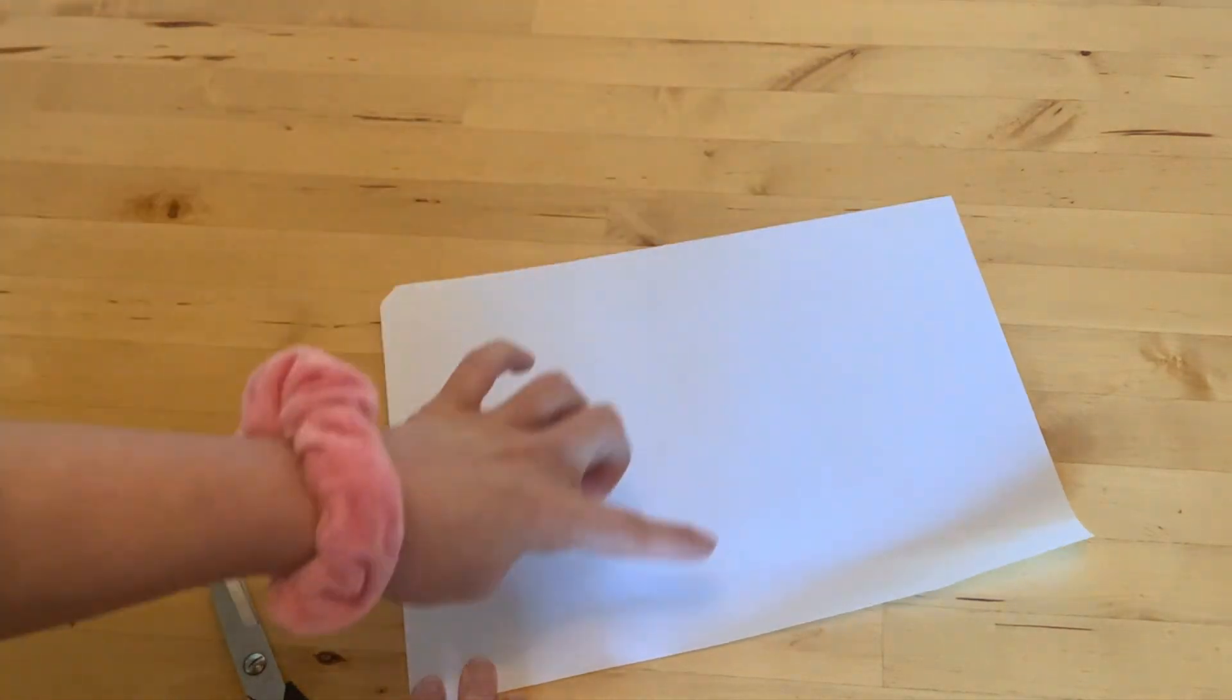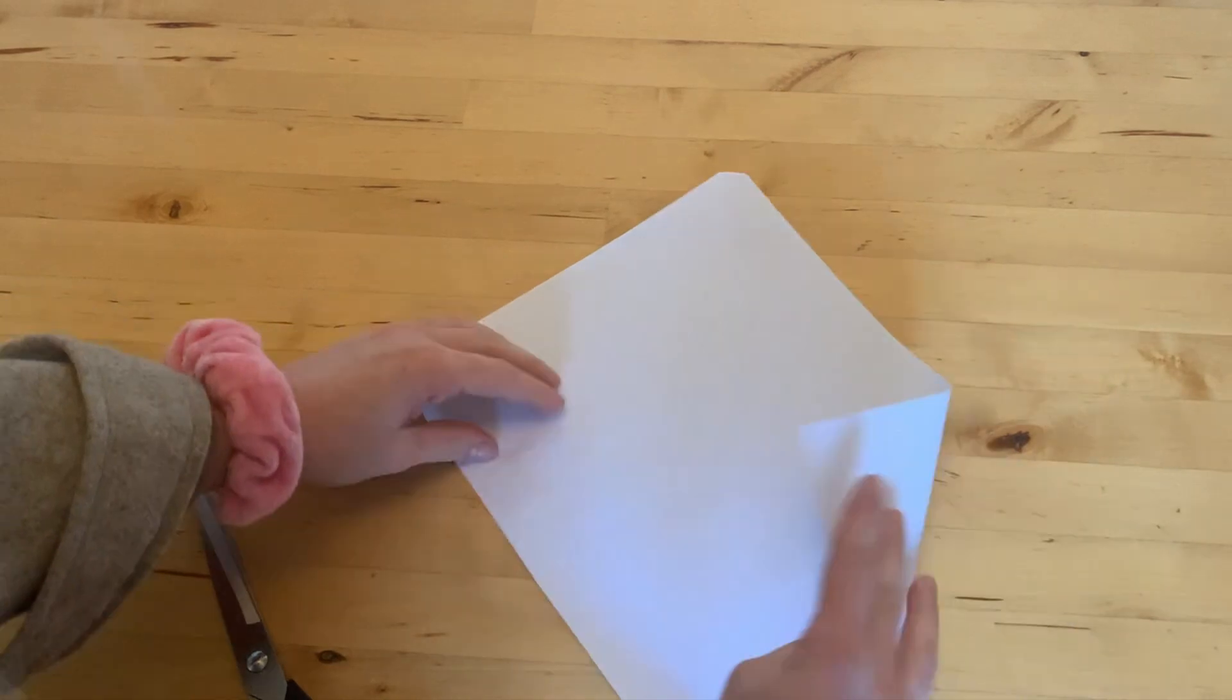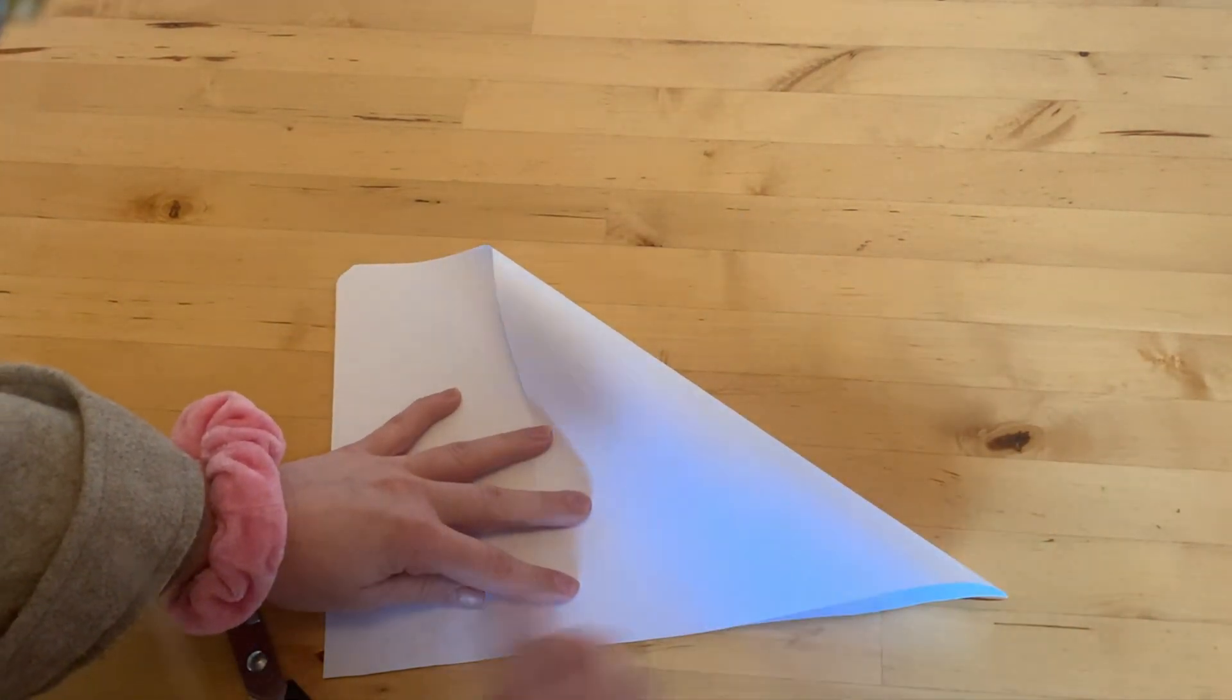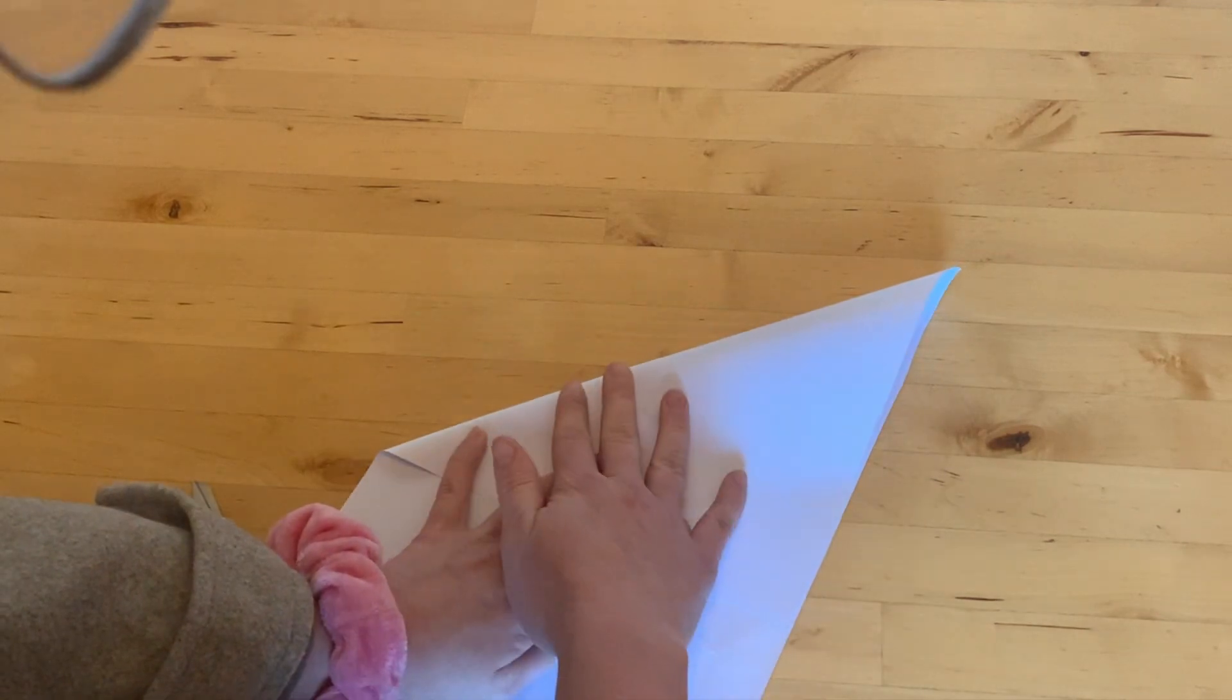First, to do this we need to turn our normal piece of paper into a square. To do this we're going to take this corner and take it to meet this edge. When you're folding it's easier to keep it on the table and to fold carefully and take your time.